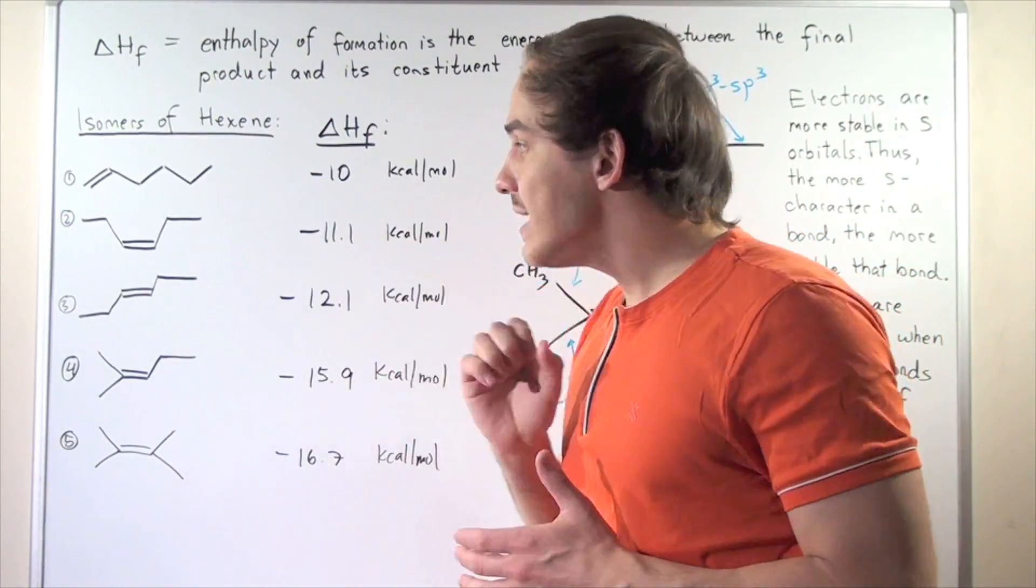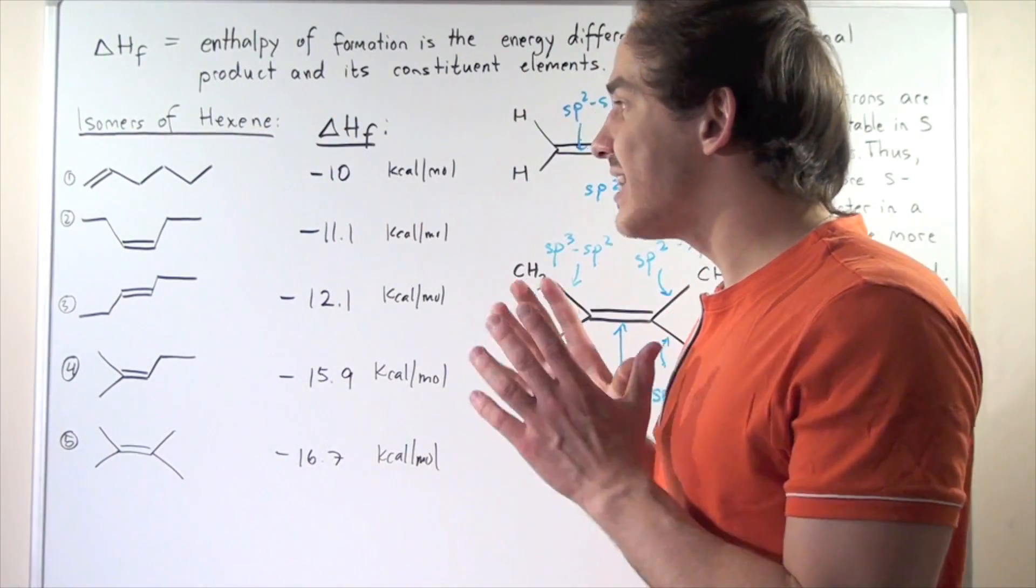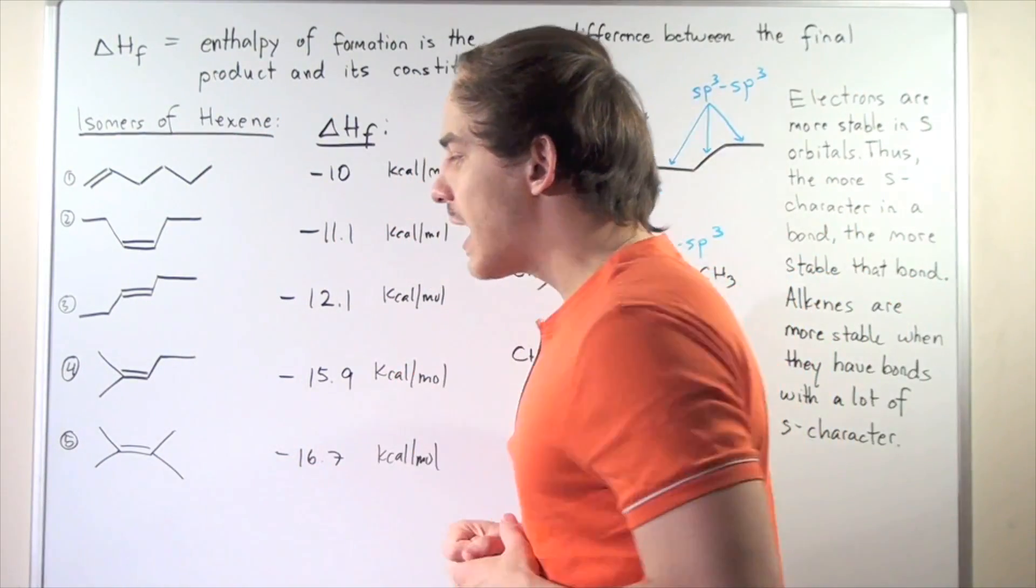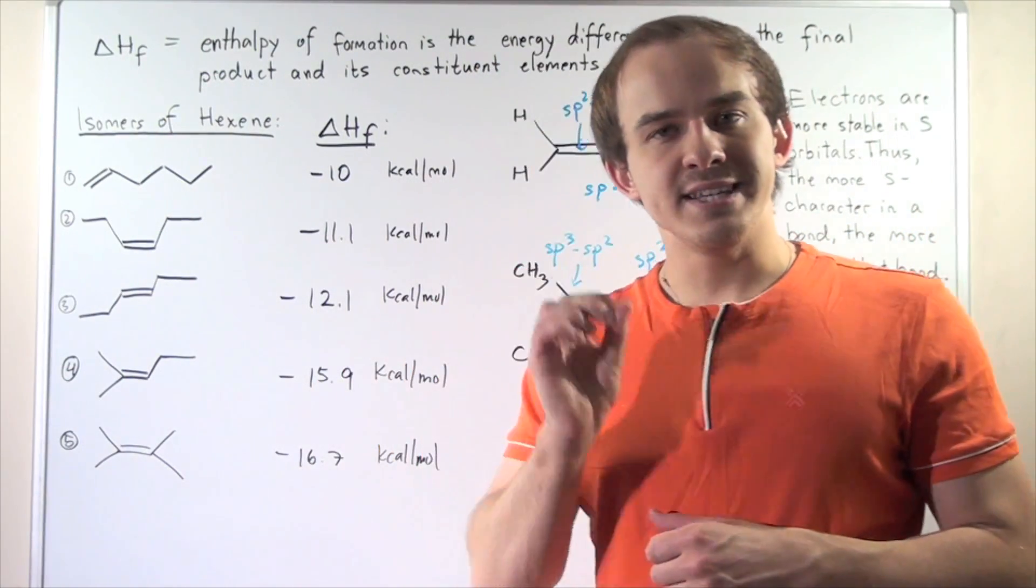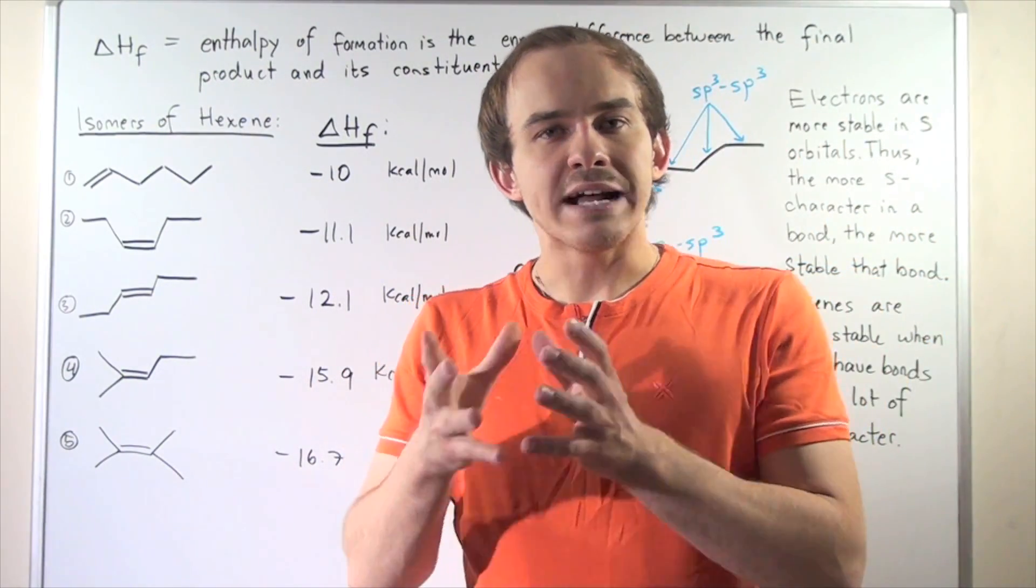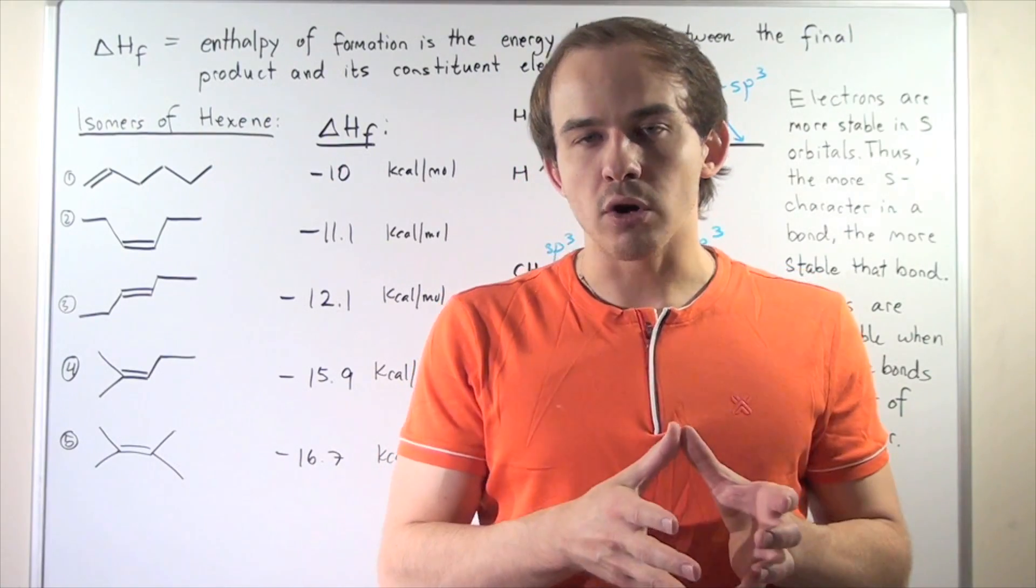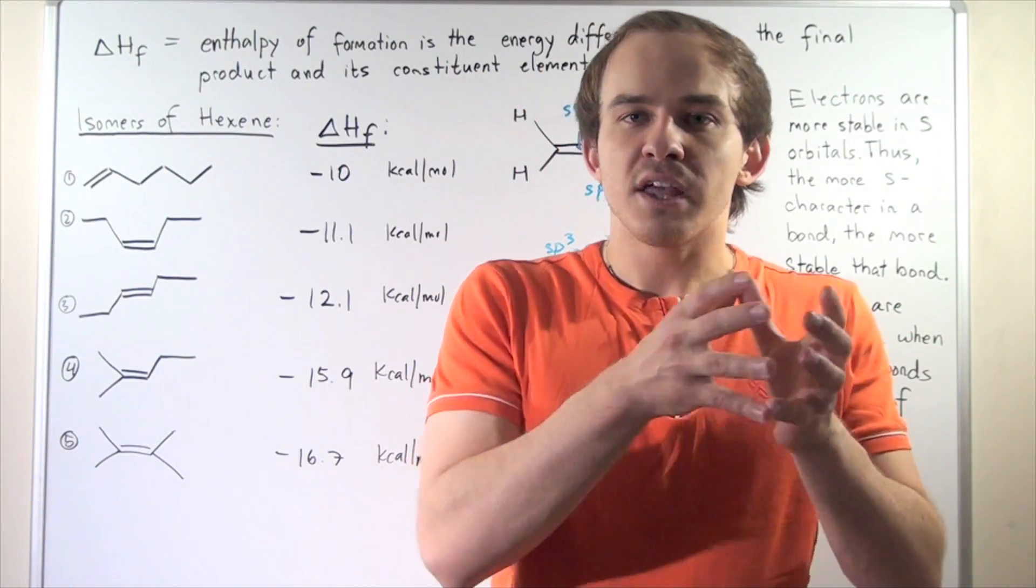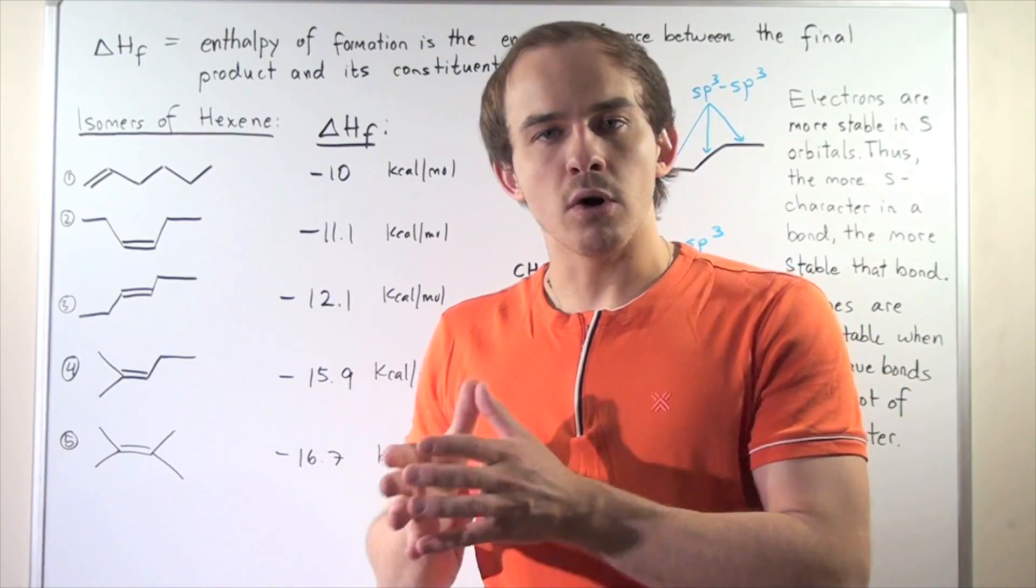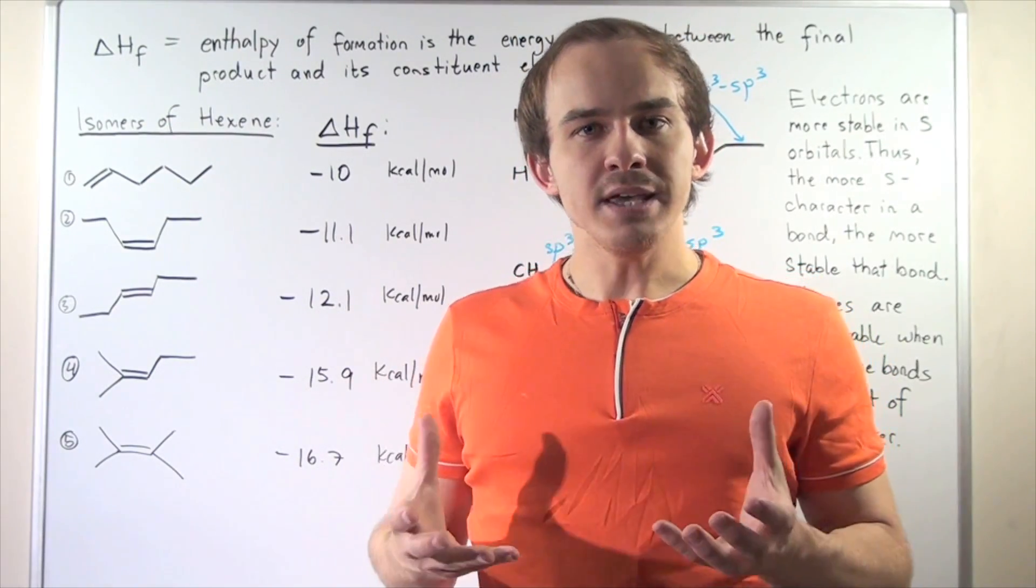So why is that? Why is it that number one is less stable than number five? So to examine this, let's recall an important detail. Remember, when electrons are found in the s orbital, those electrons are more stable than if the electrons were found in the p orbital. And generally speaking, s character is more stable than p character because of that same concept.